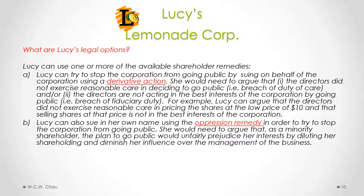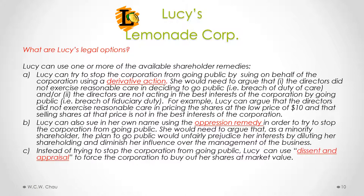The second shareholder remedy that Lucy can consider is the oppression remedy. Lucy can sue in her own name using the oppression remedy in order to try to stop the corporation from going public. She would need to argue that, as a minority shareholder, the plan to go public would unfairly prejudice her interests by diluting her shareholding and diminishing her influence over the management of the business. The third remedy that Lucy can consider is dissent and appraisal. Instead of trying to stop the corporation from going public, Lucy can use dissent and appraisal to force the corporation to buy out her shares at market value — basically, she would be asking to be cashed out and walking away from the corporation.